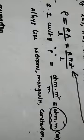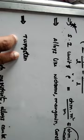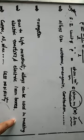Tungsten: we use it in bulbs — the filament is made of Tungsten. The reason is its high resistivity, meaning even after glowing for many hours or days, the filament is not damaged. Due to high resistivity, alloys can also be used in making electric heaters and electric iron boxes.